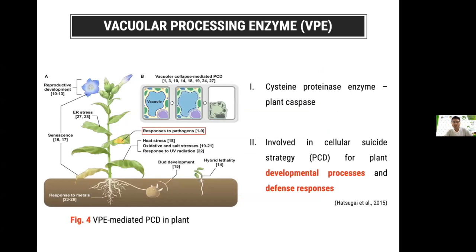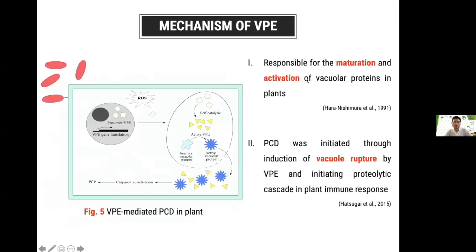Our research group decided to study a gene family known as vacuolar processing enzyme, or VPE. VPE is classified as a cysteine proteinase enzyme and acts as a plant caspase with caspase-1 activity. Previously, it has been shown that VPE is involved in cellular suicide strategy for the developmental process and defense response against biotic and abiotic stresses. VPE is known to be responsible for the maturation and activation of vacuolar proteases in plants, and a recent study showed that VPE is also involved in the activation of programmed cell death by initiating vacuolar rupture and releasing vacuolar proteases to activate the cascade in plant immune response.